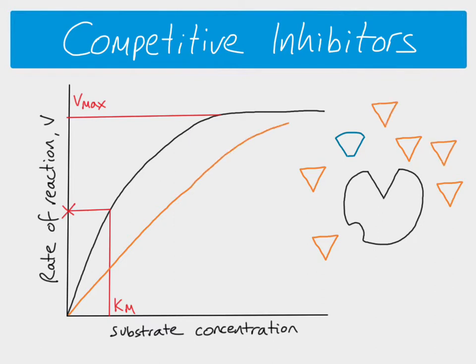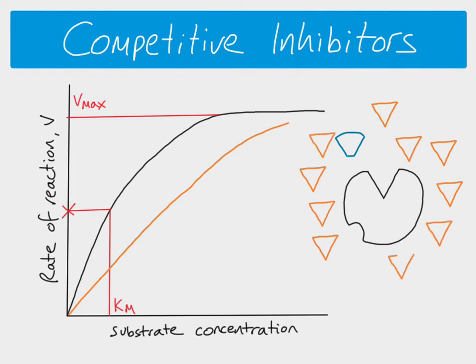However, if you keep increasing the substrate concentration, it becomes far less likely that the inhibitor molecule is going to collide successfully with the enzyme, because there are far more substrate molecules compared to inhibitors - it becomes a case of probability. With enough substrate, you will reach the same Vmax as when there was no competitor at all; the competitor has essentially been out-competed.